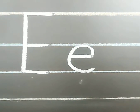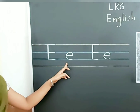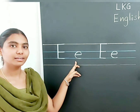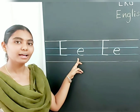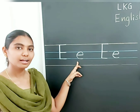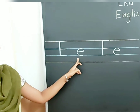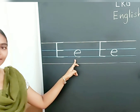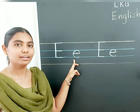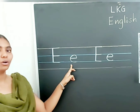The sound of the letter E is 'e'. E for engine, E for elephant, E for exit, E for elbow.